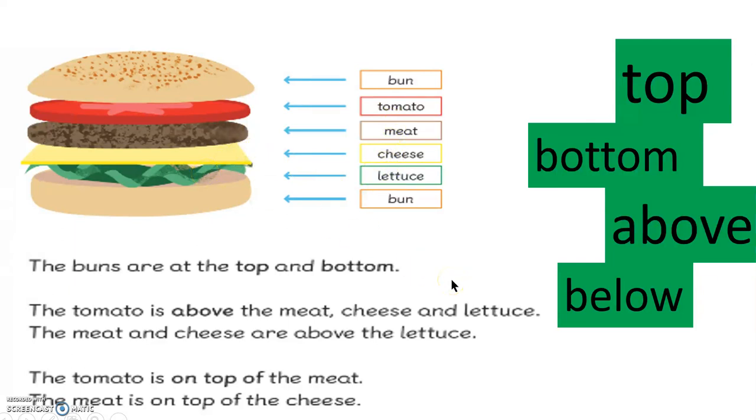The tomato is on top of the meat, and the meat is on top of the cheese. The cheese is below, which means that the meat is on top of the cheese.